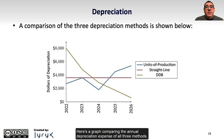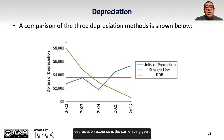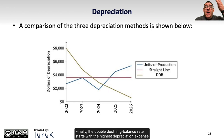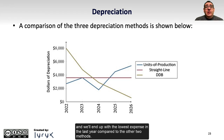Here's a graph comparing the annual depreciation expense of all three methods. The straight-line depreciation method is just that — a straight line — because the depreciation expense is the same every year. The units of production method varies each year based on the number of units produced, so depreciation can be high in some years and low in others. Finally, the double declining balance rate starts with the highest depreciation expense and then falls on a downward-sloping basis, getting smaller and smaller, ending with the lowest expense in the last year compared to the other two methods.